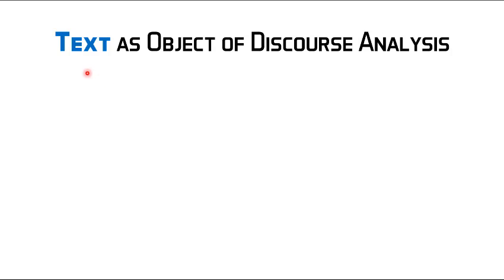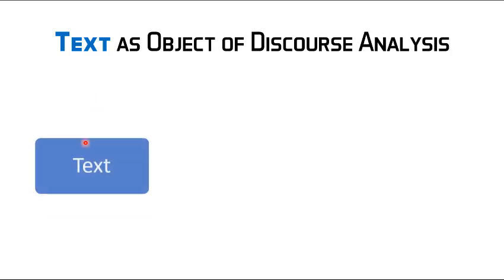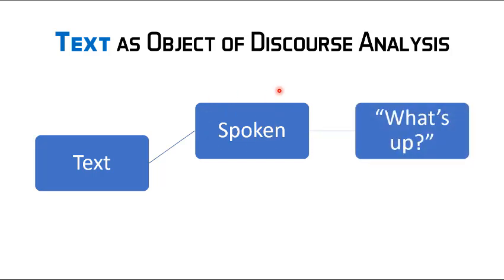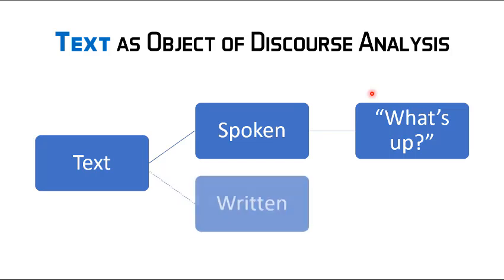Text can be classified into two types. The first is spoken text — everything that is spoken. For example, the utterance 'what's up' can mean 'what is happening' or be a greeting like 'apakabar' in Bahasa Indonesia. To find the right meaning, we analyze the discourse. If someone in the classroom is crying and you say 'what's up,' the context tells us it means 'ada apa,' not 'apakabar.'